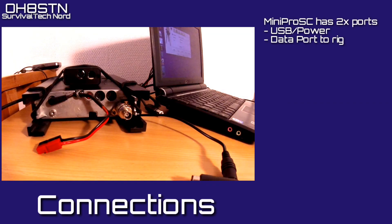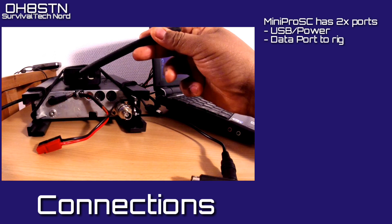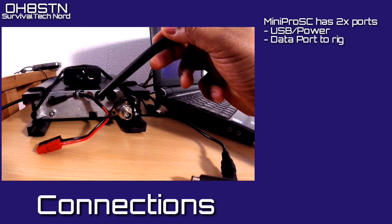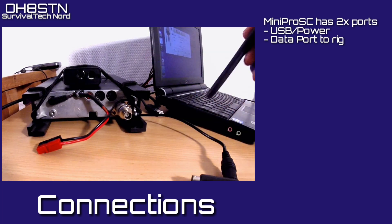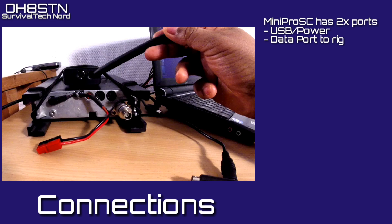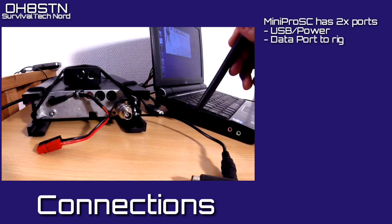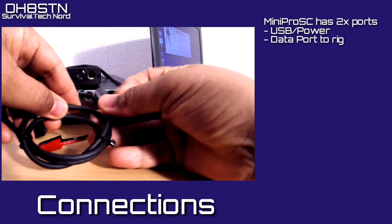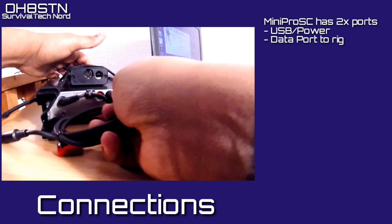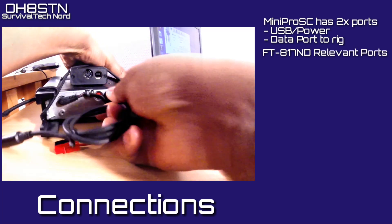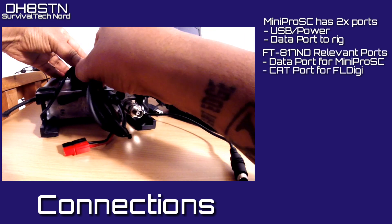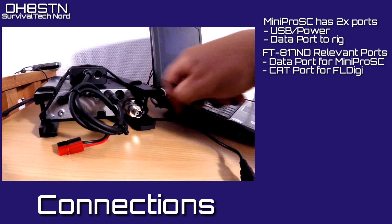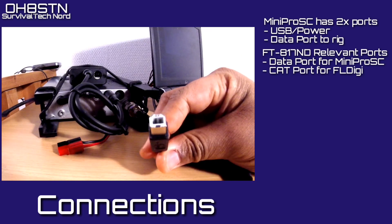The very first thing we're going to do is connect the ZLP Mini Pro SC to the Yaesu FT817 or other radio's data port. Then we'll connect the USB port from the Mini Pro SC to a spare USB port on your laptop. The Mini DIN port on the ZLP Mini Pro SC will go to the data port on your radio, and the USB port on the Mini Pro SC will go to a spare USB port on your netbook or laptop.